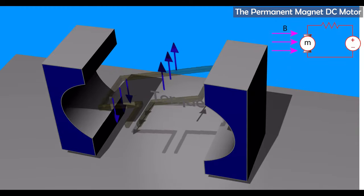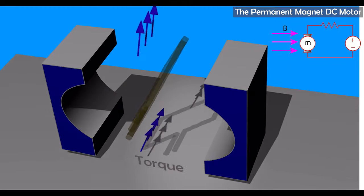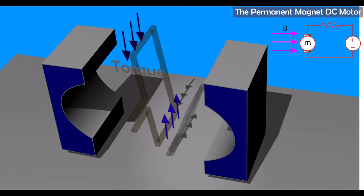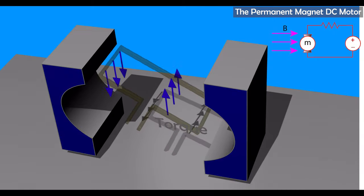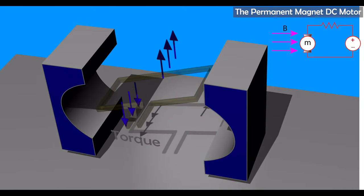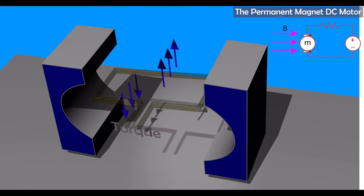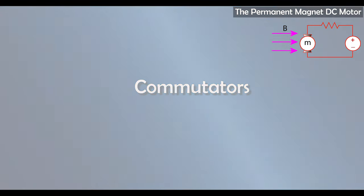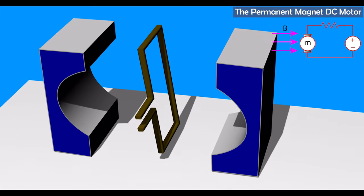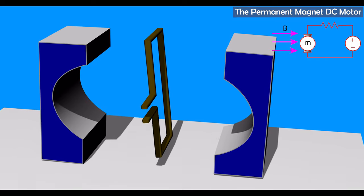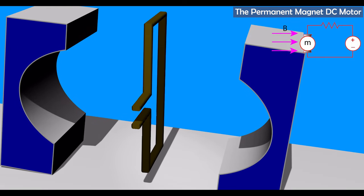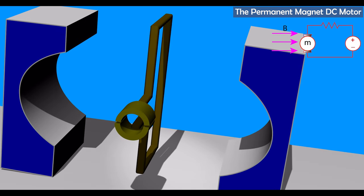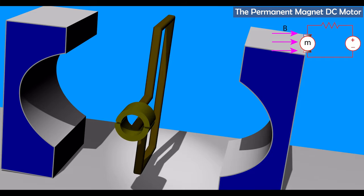If we assume that the motor has enough momentum to take it past the vertical position, the reversal of the force will allow the armature to continuously spin. This is our first engineering problem: how do we reverse the direction of the current every half cycle? The answer is the commutator. A simple but incredibly effective part of the brushed DC motor, the commutator simultaneously solves the problem of reversing the current polarity every half cycle and prevents the supply to the armature becoming tangled.